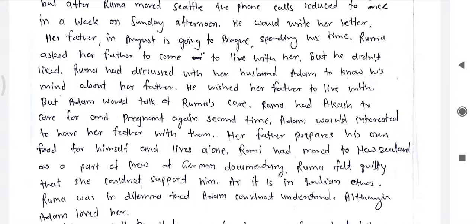Ruma, born and brought up in America in American culture, is willing that her father should come and stay with her. But it is a condition that is very difficult for the father to accept. Ruma repeatedly asked her father to come and live with her but he didn't agree. Ruma discussed with her husband Adam what he thinks about her father coming to stay with them. She thought her father needs her in old age — he is feeling isolated and alienated.